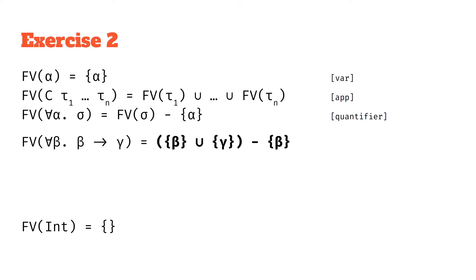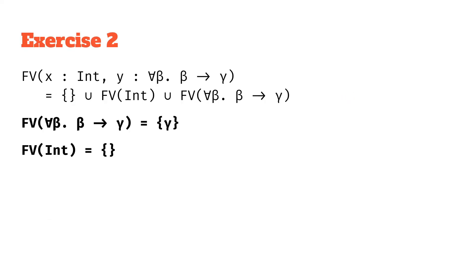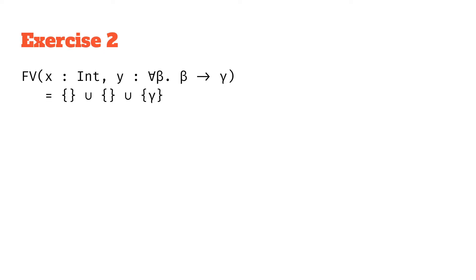Doing the substitutions: {beta, gamma} minus {beta} = {gamma}. Taking those results back to the context calculation, we take the union of all the free variables. The free variables in that context are just {gamma}. This makes sense: x has type int which has no type variables, and y's type variables are beta and gamma, but beta is bound by the for-all quantifier, so we'd expect just gamma.